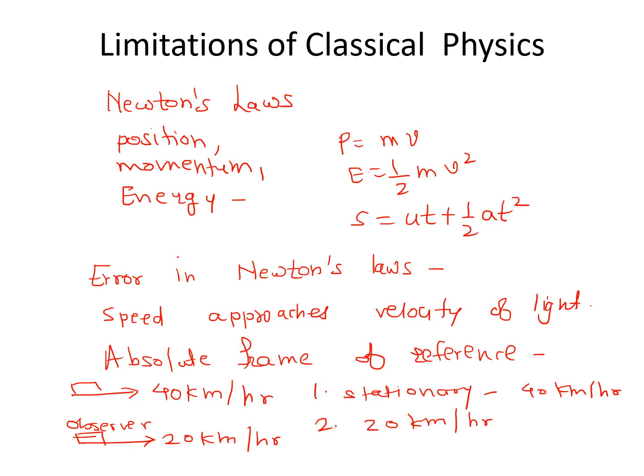Now if we are sitting in a train moving at 20 km/h but in the opposite direction of the first train, the speed of that train becomes 40 + 20 = 60 km/h. So for a stationary observer the speed is 40 km/h, for an observer moving in the same direction it is 20 km/h, and for one moving in the opposite direction it becomes 60 km/h. What is the actual absolute speed of the train?